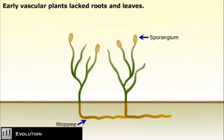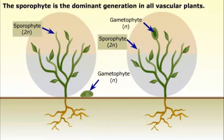The earliest fossils of vascular plants date to the Silurian Period, over 400 million years ago. These fossils reveal plants with branching stems but with no roots or leaves. They were anchored in the soil by a horizontal stem called a rhizome. These plants had sporangia at the tips of their stems. Like modern vascular plants, the sporophyte is the dominant generation in all vascular plants.